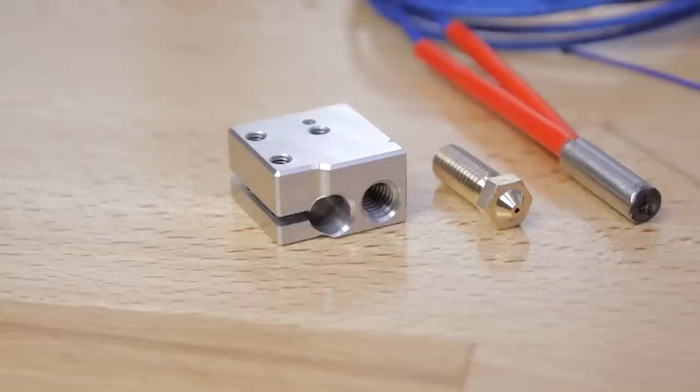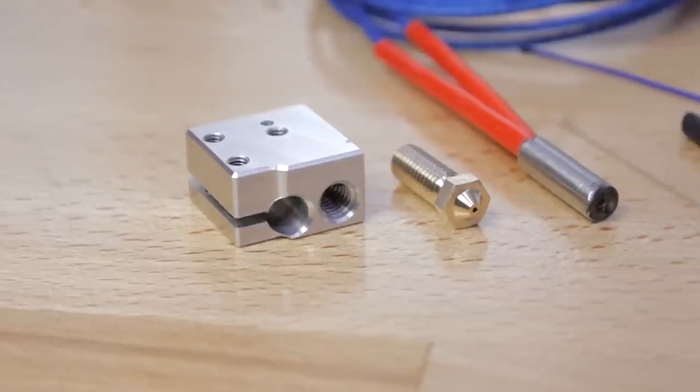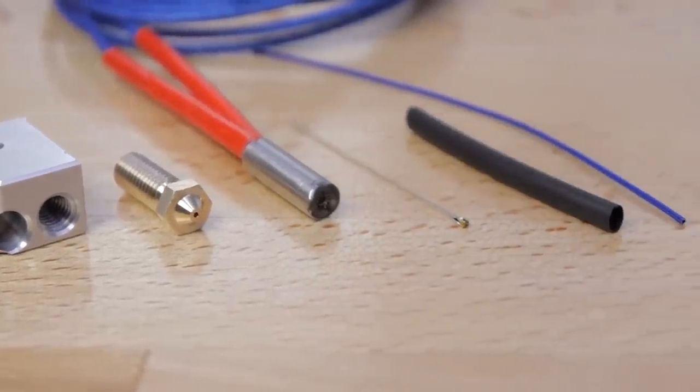Now the Volcano kit itself builds on E3D's already proven designs and is meant as an upgrade for the V6 hotend, so the starter kit only includes a heater block, a nozzle, a heater cartridge, a thermistor with heat-shrink and sleeving, and a few screws with a disposable hex wrench.